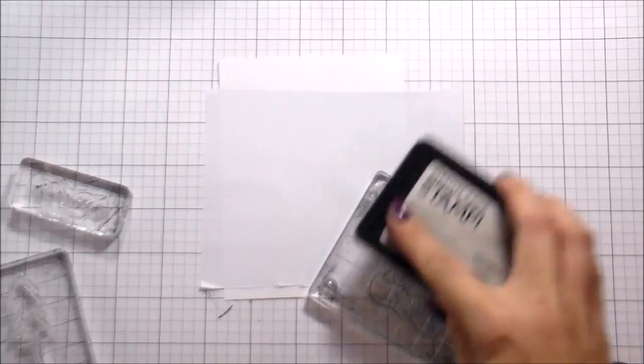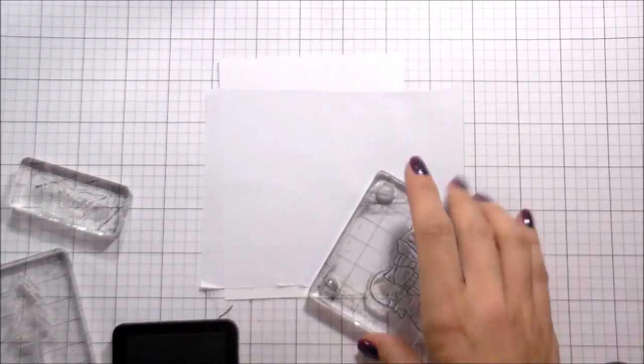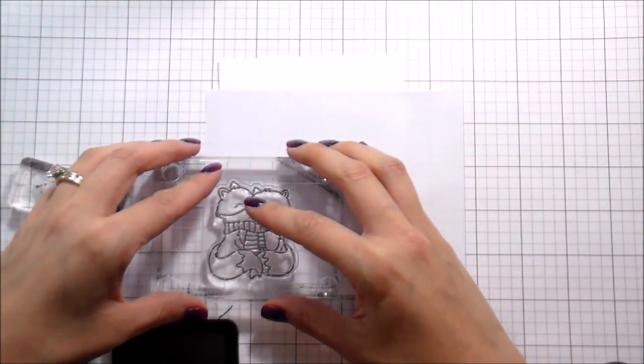So this is just a piece of Eclipse masking paper. I just kind of stuck it down so that I could start to make some masks because this is going to be a one-layer card.